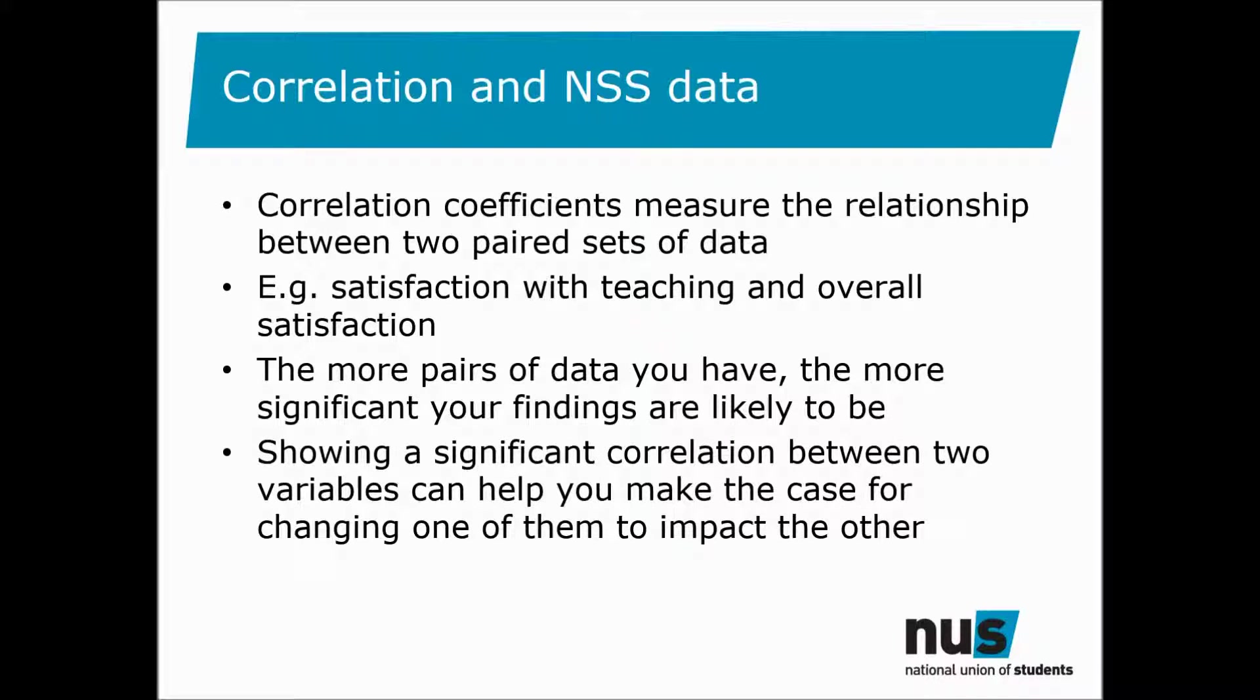Showing a significant correlation between two variables can help you to make the case for changing one of them to impact the other, especially if you can find a relationship between an area of the survey and question 22. So for instance, if teaching quality and overall satisfaction were highly correlated at your institution, this gives extra weight to an argument for increasing teaching enhancement initiatives.